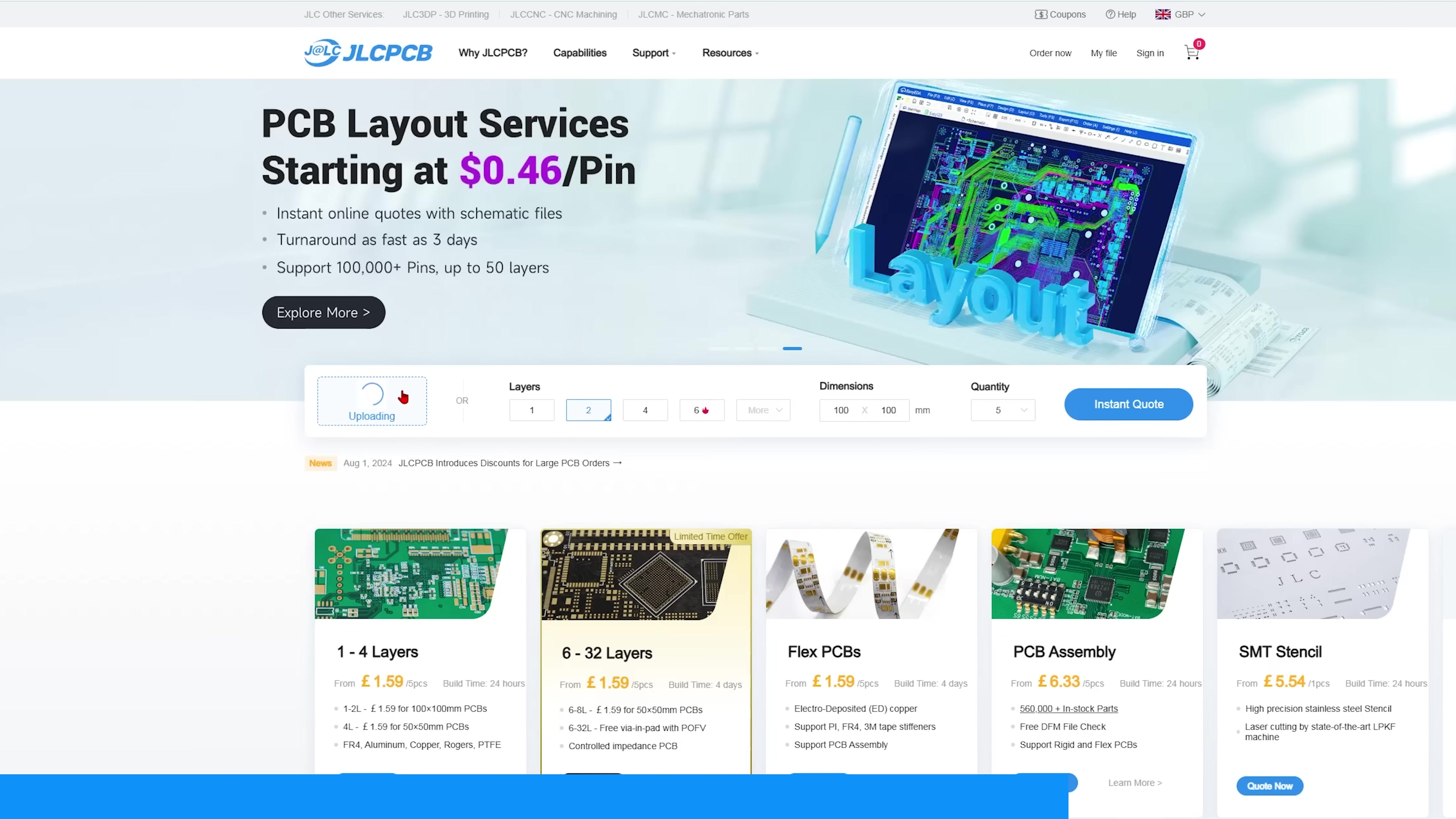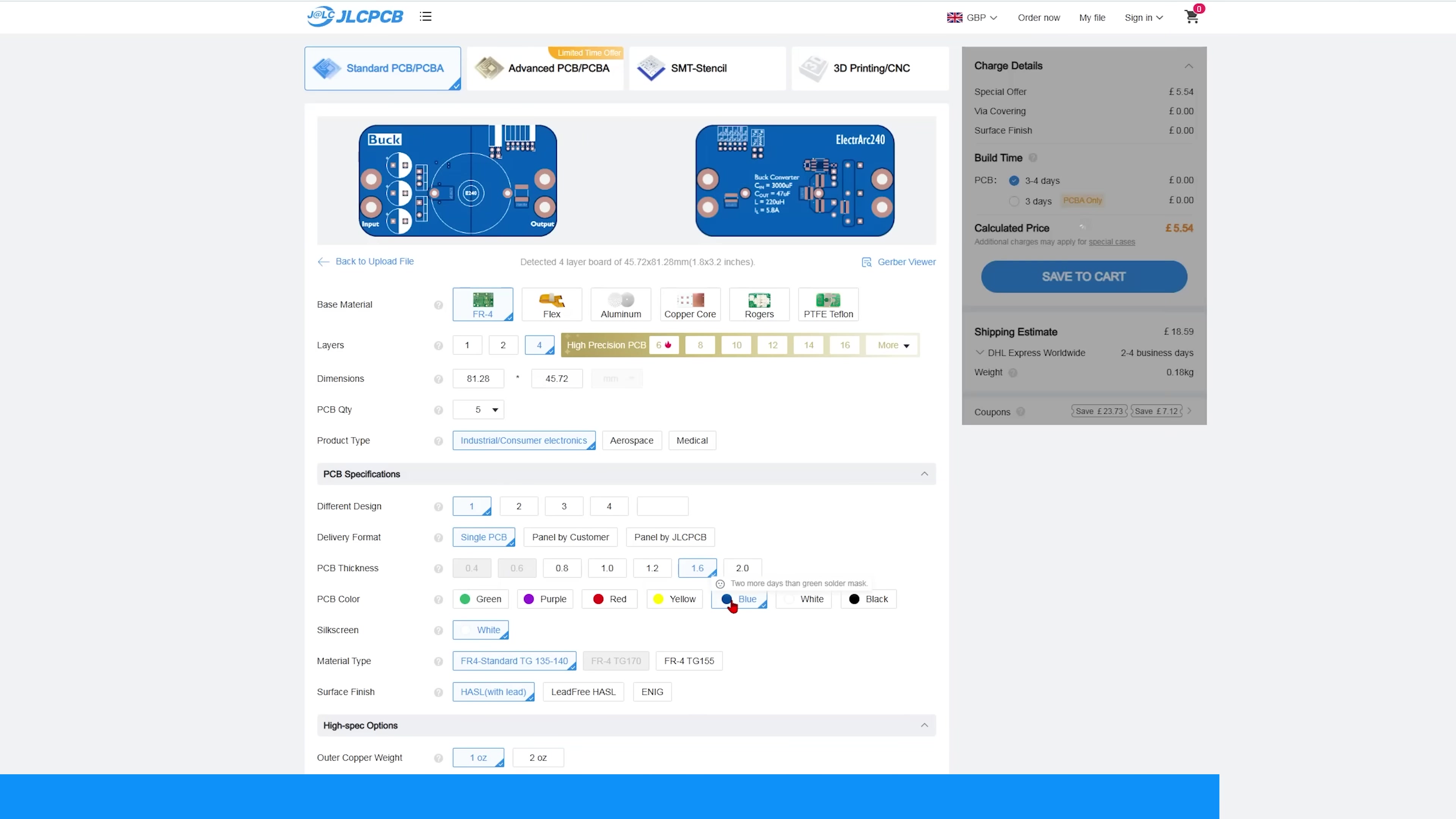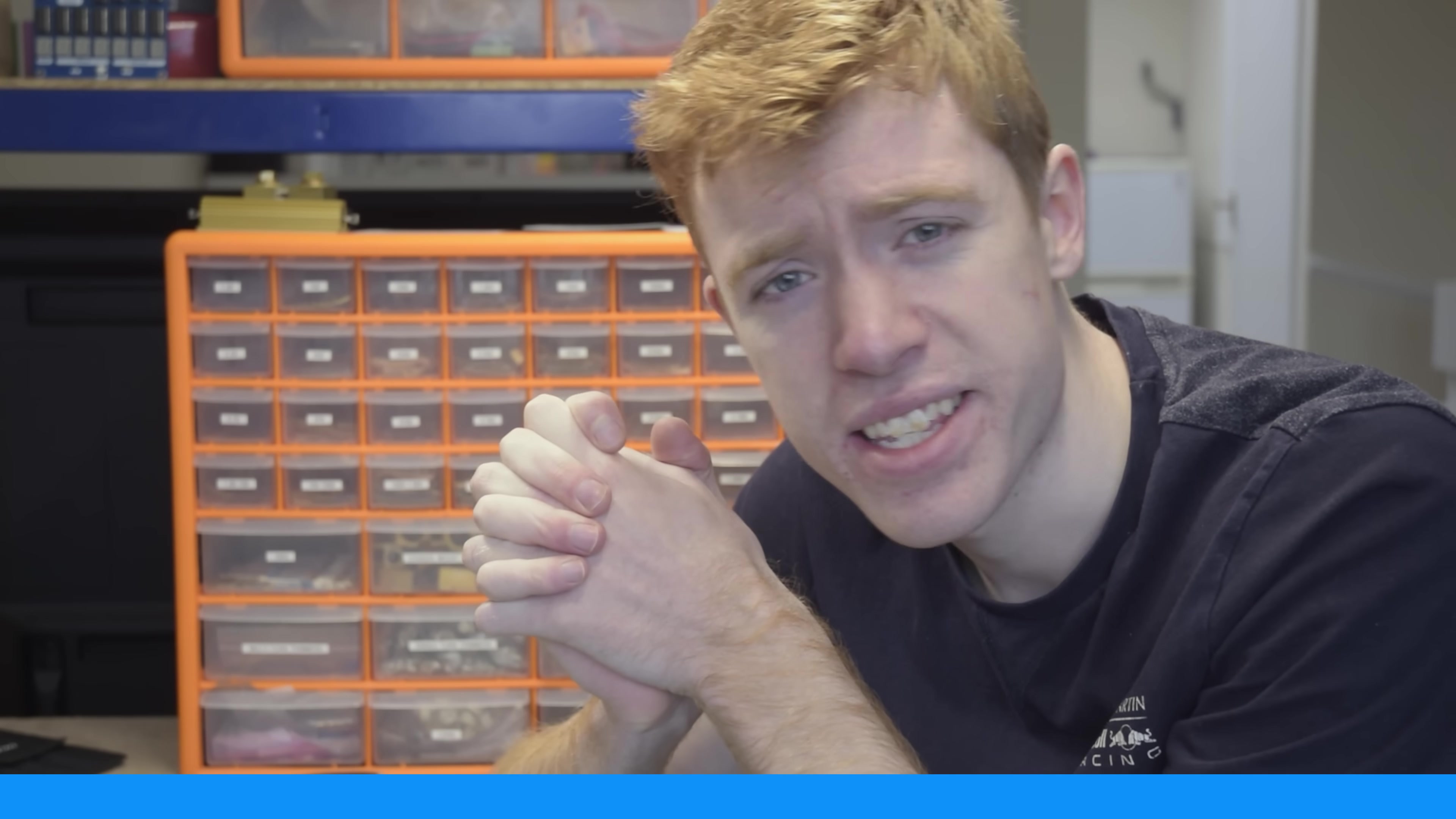To get your boards from JLCPCB, all you need to do is drag and drop your Gerber files onto their website, select any options you need, hopefully a bit of bling, and then select your shipping option from a great range of speed and affordability. And now, back to DC to DC converters.